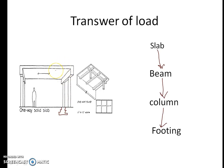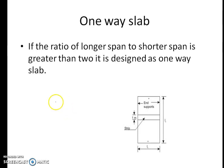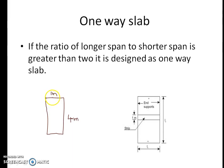To understand how the load is transferred from slab to beam, we should know what is a one-way slab and a two-way slab. We'll take a slab with dimensions of one meter in the x-direction and four meters in the y-direction. This is the shorter length and this is the longer length of the slab.